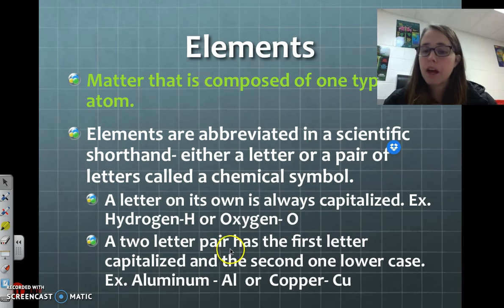A two-letter pair has the first letter capitalized and the second one lowercase. For example, aluminum is capital A lowercase L, or copper is capital C lowercase U.